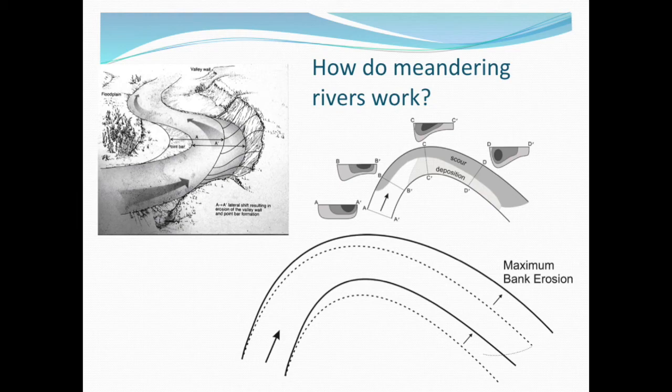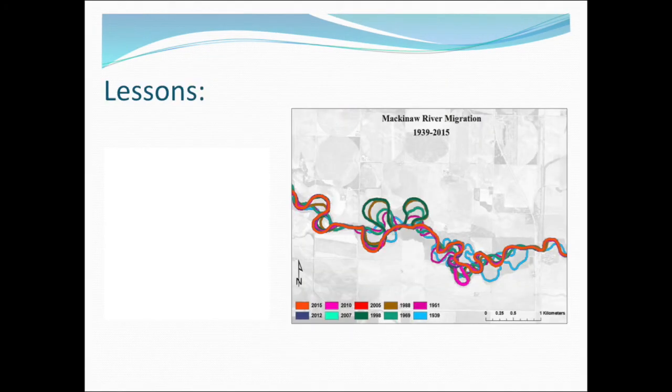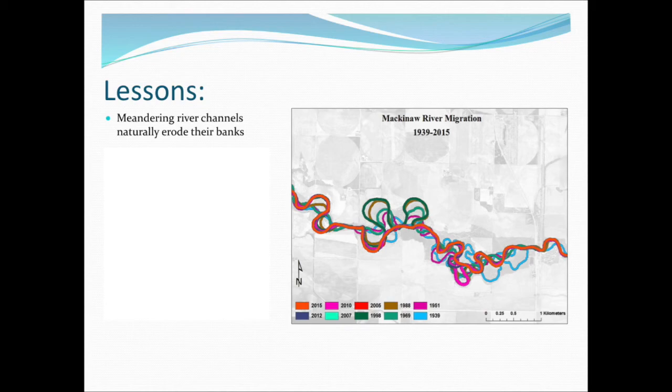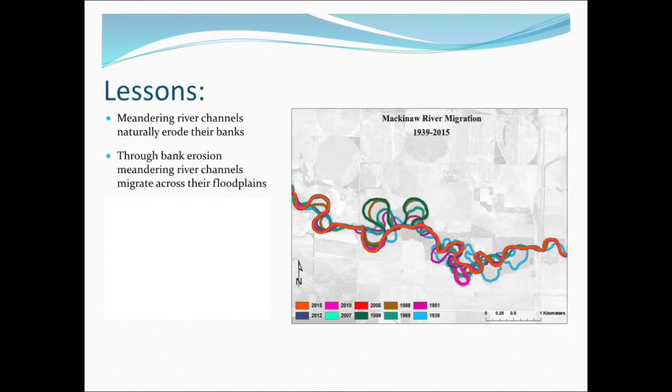Going back to our diagram, the maximum bank erosion in a meandering river occurs downstream of the bend apex — the sharpest point in the bend — that's where you're going to get the bank moving outward over time. Rivers do move; meandering rivers migrate. They naturally erode their banks — this is a natural process; the river is not misbehaving. It's simply part and parcel of how the river works. Through bank erosion, meandering river channels migrate across their floodplains.